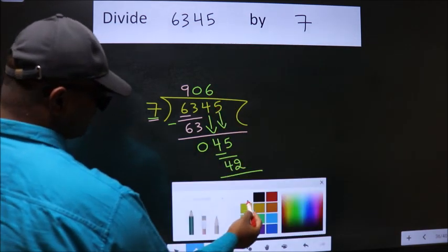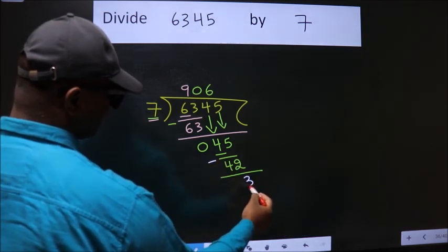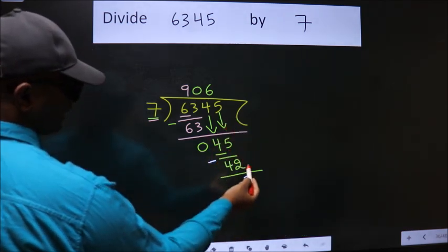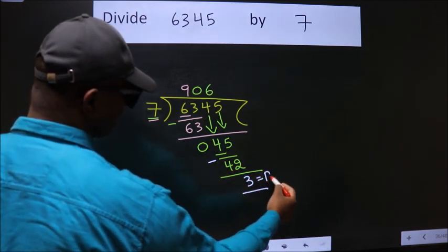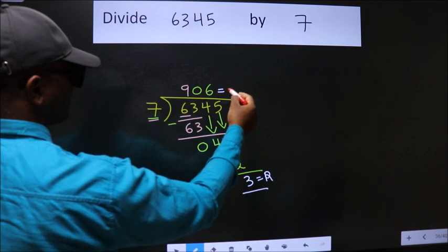Now we subtract. We get 3. No more numbers to bring it down. So we stop here. This is our remainder. This is our quotient.